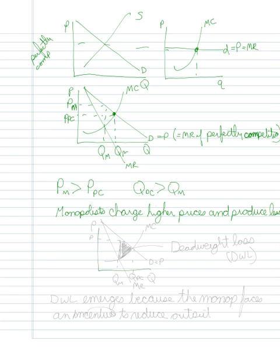Now, what also starts to emerge here for the monopolist is this triangle right here. This triangle is known as the deadweight loss, or what's sometimes called the DWL. The deadweight loss emerges because the monopolist faces an incentive to reduce output. That's what's determining the height of this triangle. It's basically the difference between q PC and q m.